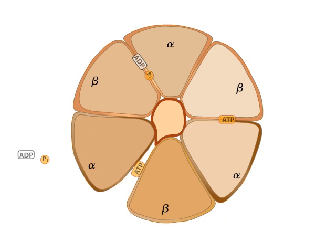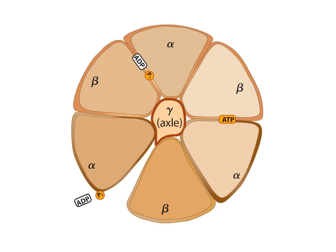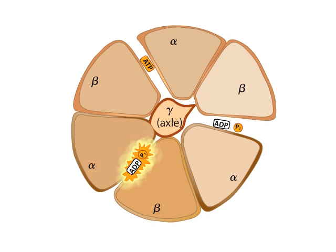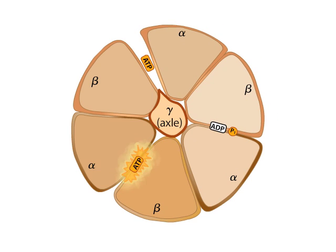However, the axle turning inside F1 causes F1 to change conformation, catalyzing the formation of ATP from ADP and inorganic phosphate.